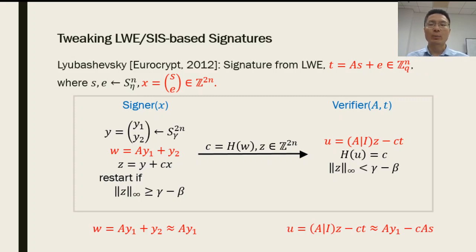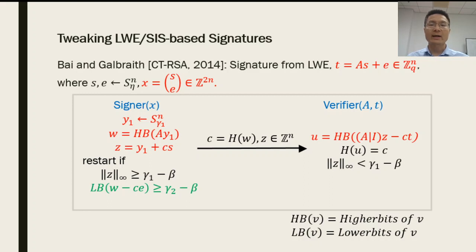After changing to the LWE problem, a useful feature is that the vector w equals A times y1 plus y2, which is mainly dominated by A times y1, as y2 is small. In particular, the higher bits of w almost equal the higher bits of A times y1. This also holds for the vector u. At CT-RSA 2014, Bai and Galbraith found that one can utilize this feature to further reduce the size of signatures by removing the part related to y2. For this goal, we need to add one more rejection on the lower bits of w minus c times E, such that it is not too big and will not affect the higher bits of w.